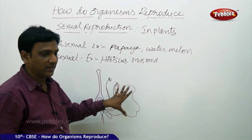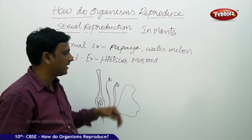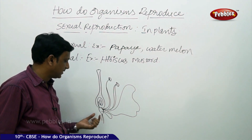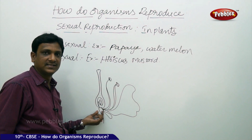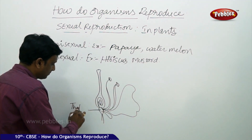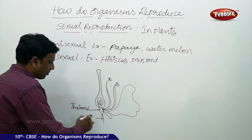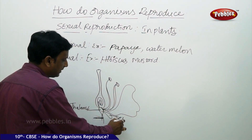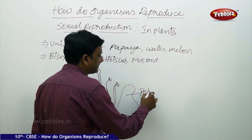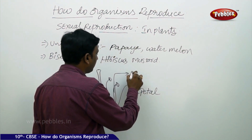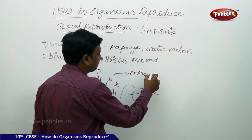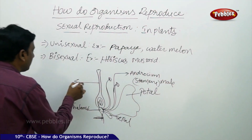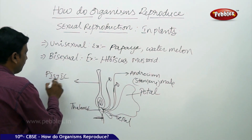Here we have the different parts of a flower. This is a bisexual flower having both female and male reproductive parts. The flower consists of a base called the thalamus, on which all other parts are embedded. There is the peduncle, then the sepal, then the colored part that attracts insects called the petal, then the male reproductive part called the androecium or stamens, and the female reproductive part called the pistil.